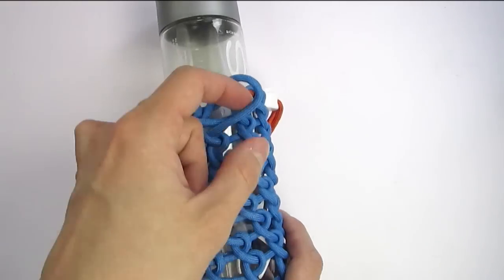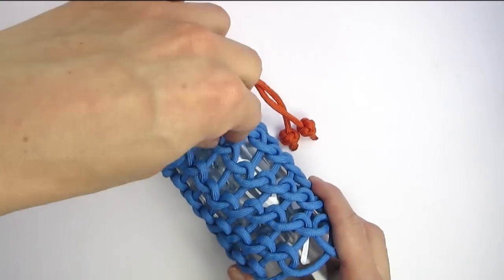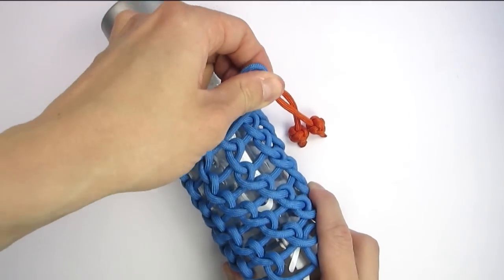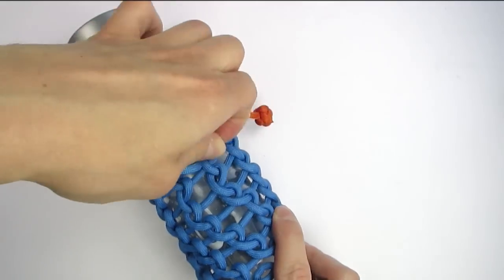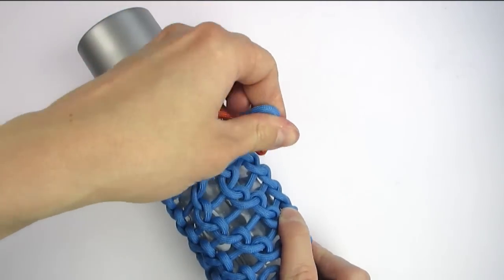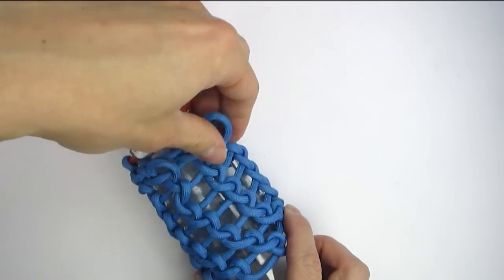A quick tip, when you are making these hitches, after you achieve a certain length, you can tighten them up by simply pulling the slack from the first hitch to the last, pulling on each. This will tighten up and even out your hitches, which is a great way to improve the look of your bottle wrap.